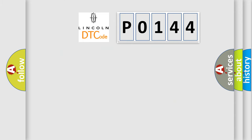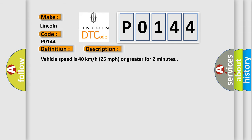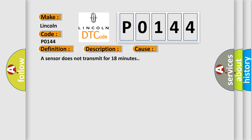So, what does the diagnostic trouble code P0144 interpret specifically? The basic definition is: left rear low tire pressure sensor. Here is a short description of this DTC code: vehicle speed is 40 kilometers per hour (25 miles per hour) or greater for two minutes. This diagnostic error occurs most often when a sensor does not transmit for 18 minutes.